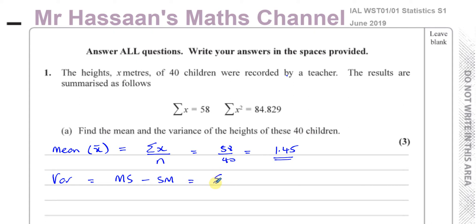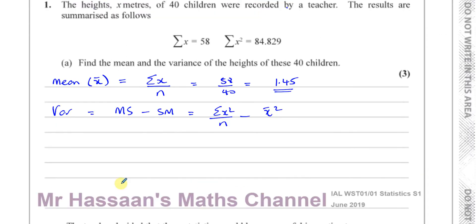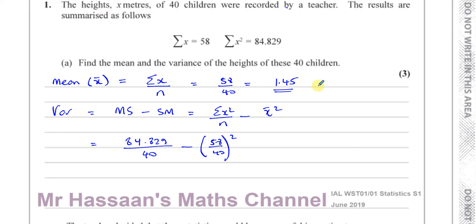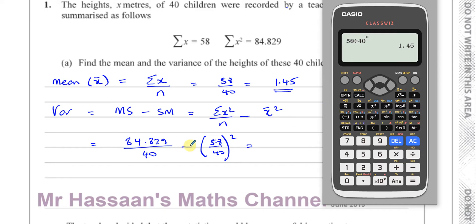The mean of the squares is the sum of the squares divided by the number of entries, and the square of the mean is the mean squared. I always use the original fraction when finding the square of the mean, because sometimes the mean is a rounded value — even though in this case it's exact. So we have 84.829 over 40 minus (58/40)².